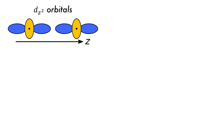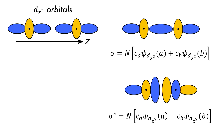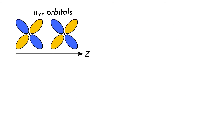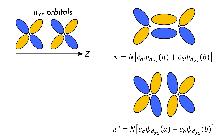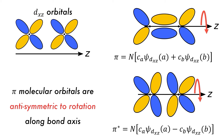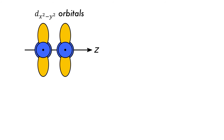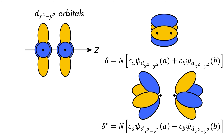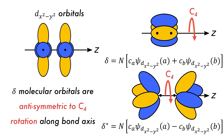Whilst there are five d orbitals, only some of their combinations will result in molecular orbitals. The dz² orbitals can combine to form sigma bonding and sigma star anti-bonding orbitals, because they are symmetric to rotation along the bonding axis. The dxz atomic orbitals, however, can combine to form pi bonding and pi star anti-bonding orbitals, because they are anti-symmetric to rotation along the bonding axis, as they have a phase change where yellow becomes blue and vice versa. When atomic orbitals meet side to side, as they do in dx²-y² and dxy orbitals combining, they form what are called delta bonding and delta anti-bonding orbitals. Delta orbitals change sign on a C4 rotation around the bonding axis.